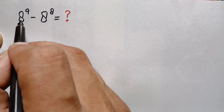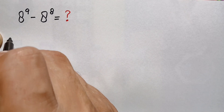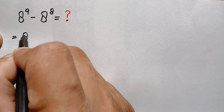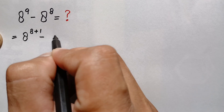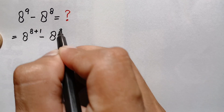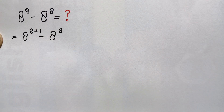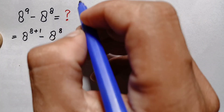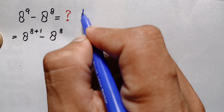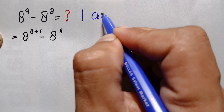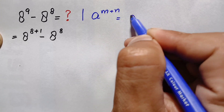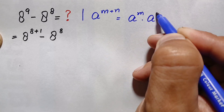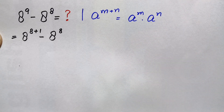We will use the second method. We rewrite the first term as 8 raised to power 9, where 9 is written as the sum of 8 plus 1, minus 8 raised to power 8. In the first term we use the exponential identity: a raised to power m plus n equals a raised to power m times a raised to power n.